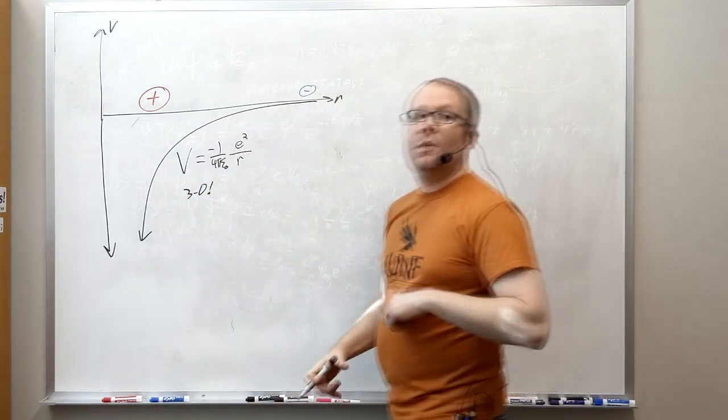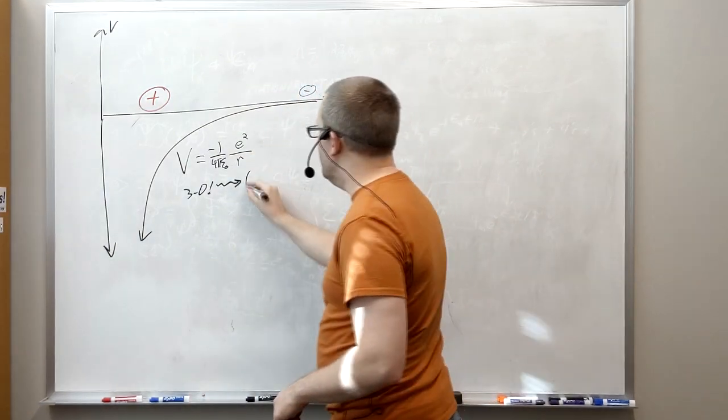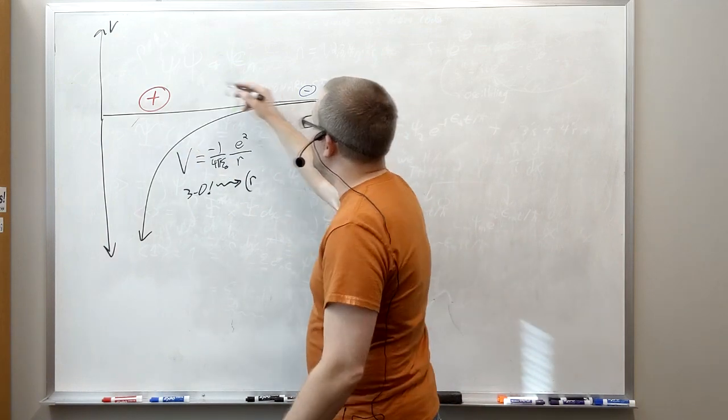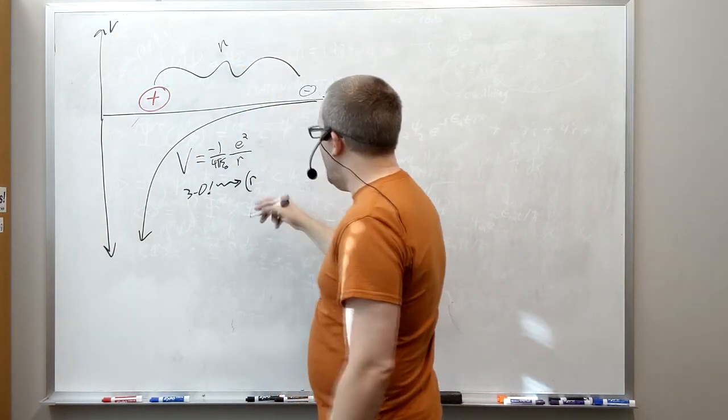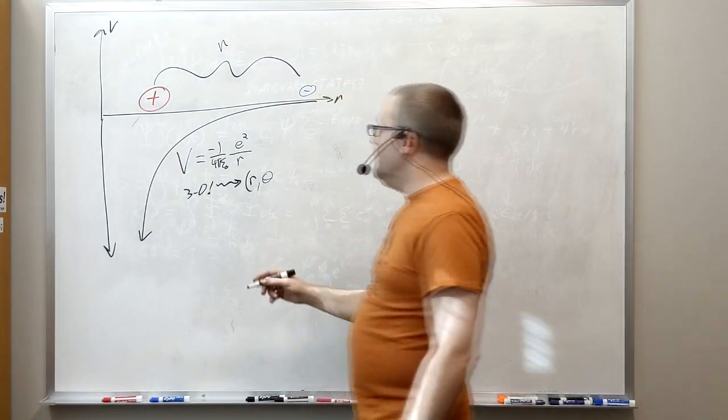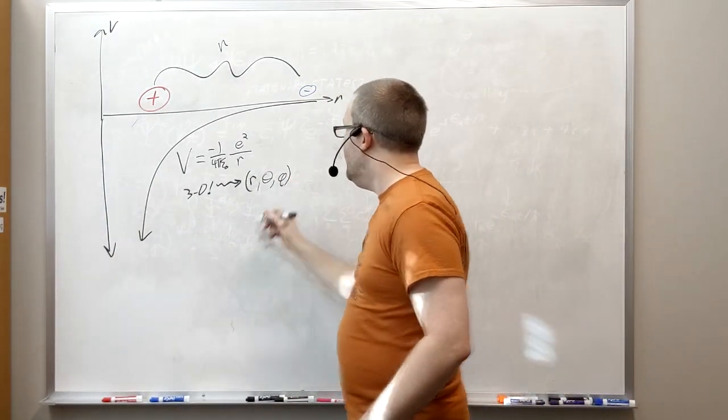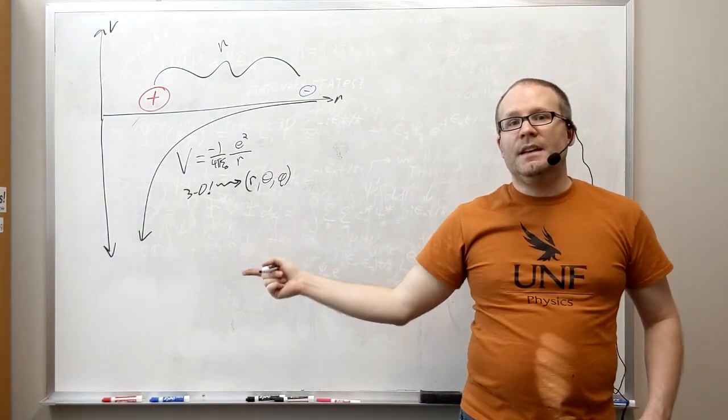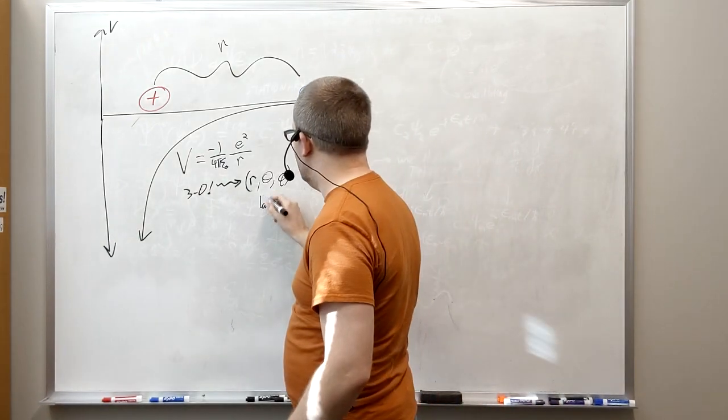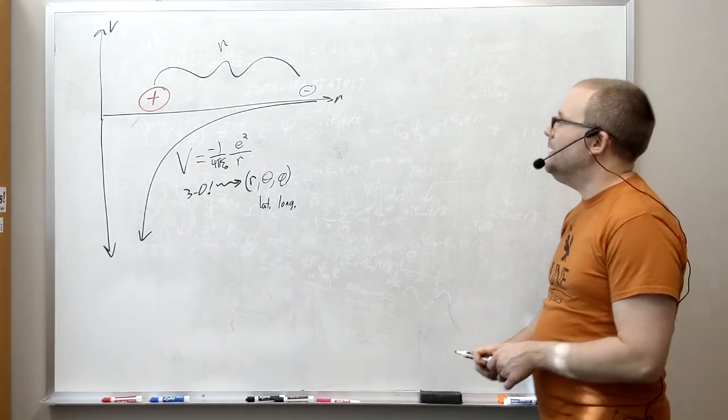The thing that makes this different than the problems we've worked with before is that this is now in three dimensions. The best way to work this problem in 3D is to use spherical coordinates. In spherical coordinates you give a single distance r, that's our distance from the proton to the electron, and you give two angles: a polar angle theta measured coming down from the z-axis, and a planar angle phi measured around the z-axis in the xy plane. You can think of these simply as latitude and longitude.